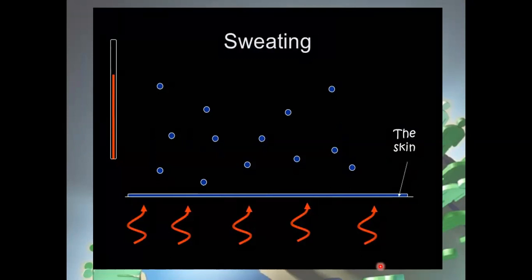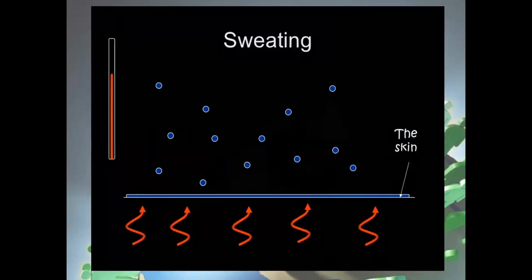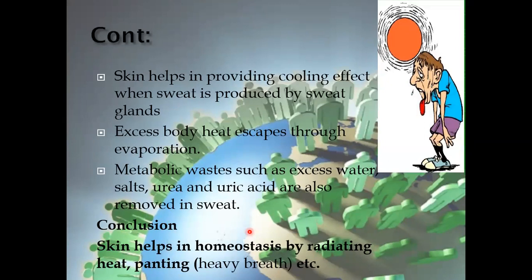This picture shows sweating. Excessive heat is released to the external environment through the skin in the form of vapors, or as a result of evaporation. So excessive body heat escapes out through evaporation. The skin also helps in providing a cooling effect when sweat is produced by sweat glands. As a result, metabolic wastes such as excess water, salts, urea, and uric acid are all removed in sweat. So it is concluded that skin helps in homeostasis by radiating heat and panting.